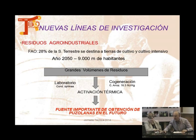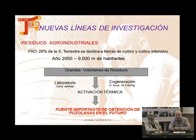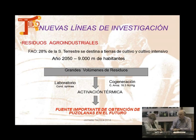Ahora Moisés va a hablar de otra línea de investigación muy importante que estamos llevando a cabo con países iberoamericanos: los residuos agroindustriales. Cuando compráis en un supermercado el producto final, para que se desarrolle ese producto hay una serie de plantas en las cuales, a la hora de la recolección, se tiran o se queman, y sin embargo realmente se pueden utilizar para fabricar cementos ecológicos. Se estima que en 2050 habrá 9.000 millones de habitantes en la Tierra, cuando ahora mismo vamos por los 6.500 o 7.000 millones, así que la demanda va a aumentar casi un 70%, y por lo tanto van a aumentar mucho más los residuos que se pueden aprovechar como materia prima para los sectores industriales.